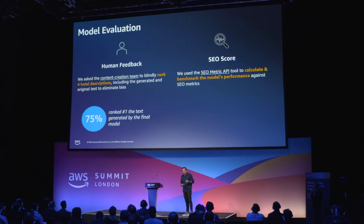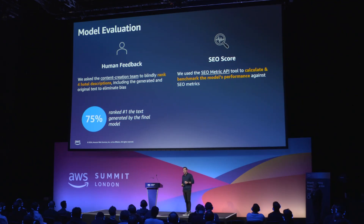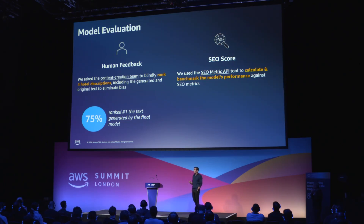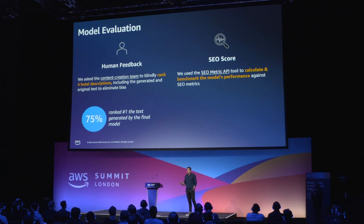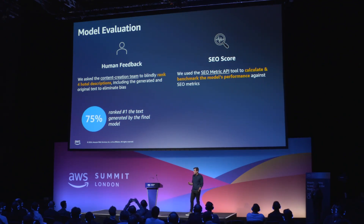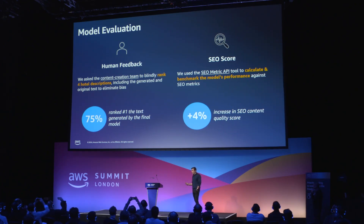We found out that 75% of the time, the generated text from our final model came first. Also, an important role was played by the SEO score. We calculated the SEO score of our generated text, compared it to the benchmark, and managed to increase it by 4%.